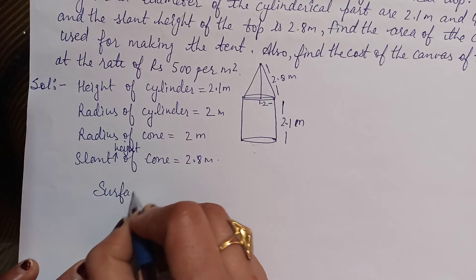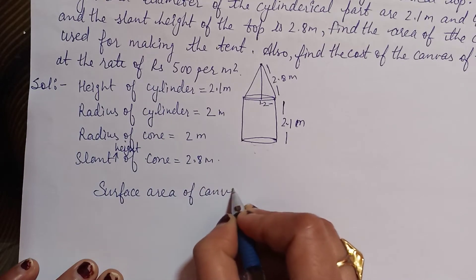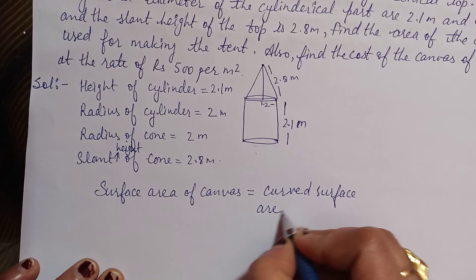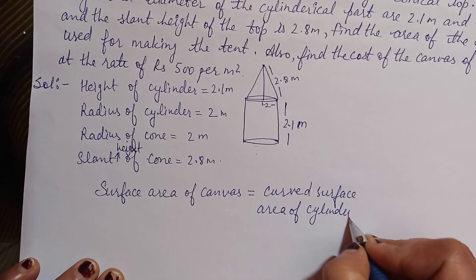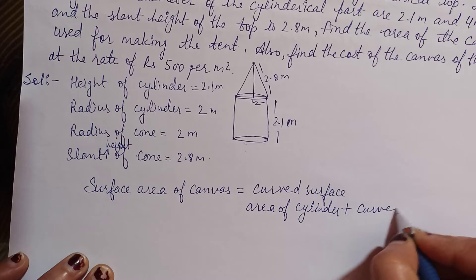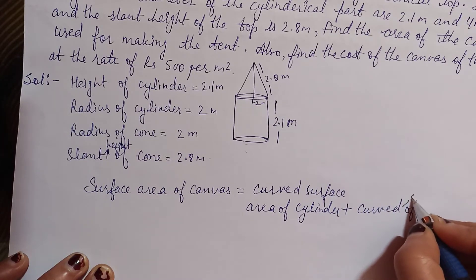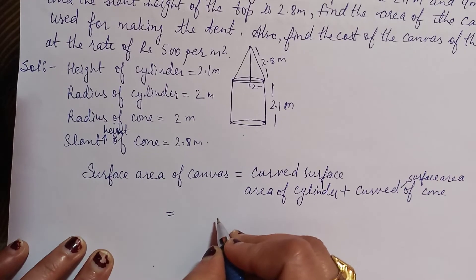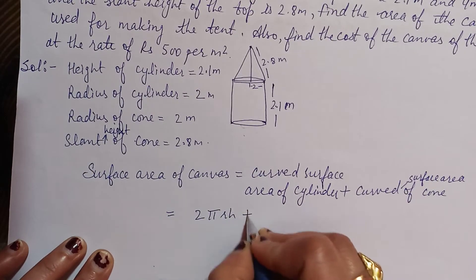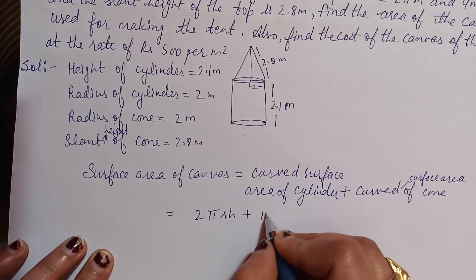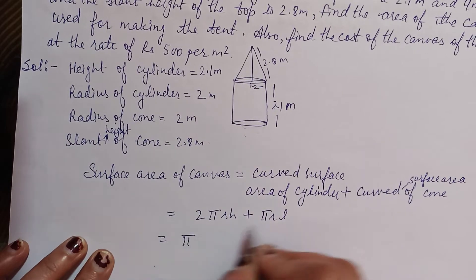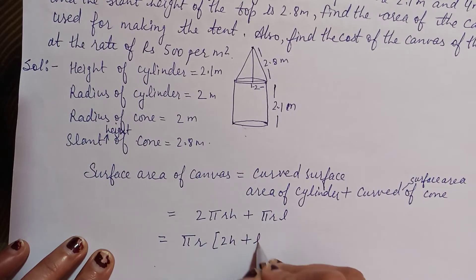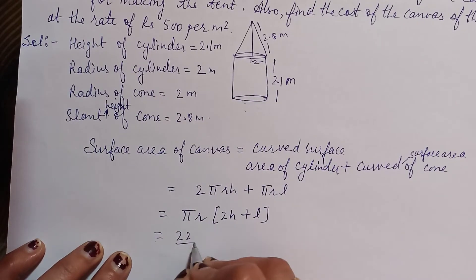Surface area of canvas equals curved surface area of cylinder plus curved surface area of cone. That is 2πrh plus πrl. Taking π and r common, inside we have 2h and l. For π we use 22/7 since no value is given.